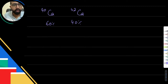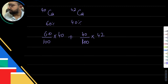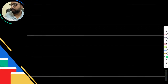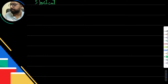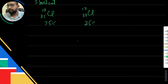So let's calculate it. Multiply the percentage — 60% — with its mass, and similarly 40% with its mass, then add them all together. Okay, I'll tell you a shortcut, especially for Paper 1 MCQs. Take the chlorine isotopes example — the abundances are 75% and 25%. Take the ratio of their abundance.